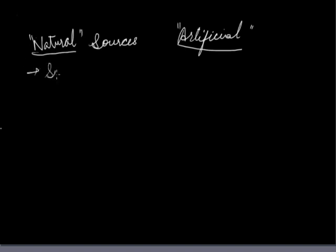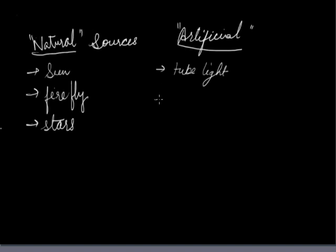For example, sun, firefly, stars, etc. While artificial sources of light are tube light, bulbs, etc. Here we can add planets also because these are the sources generated by nature. Whether they are non-luminous, that they do not have their own light, but they are natural sources. And artificial sources are those sources simply which are generated by human beings.